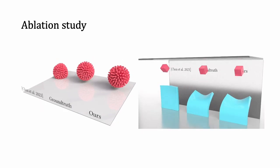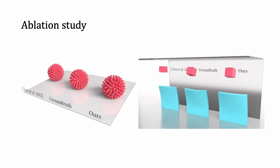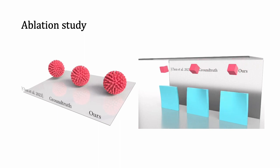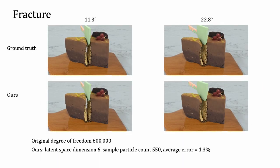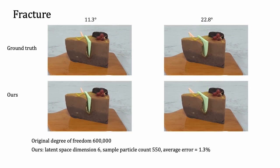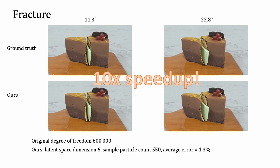Our addition of the neural stress field and neural affine field plays an important role in capturing complex self-contact and significant rotation. We simulate slicing a piece of cake with latent space dimension 6 and an average of 550 sample particles, generating a vivid cutting scenario with an error of 1.3%. Thanks to the significant dimension reduction, we achieve an overall speed-up of more than 10 times.